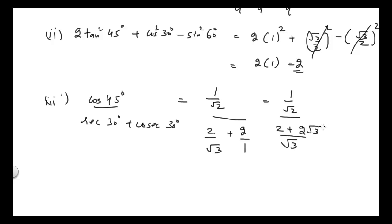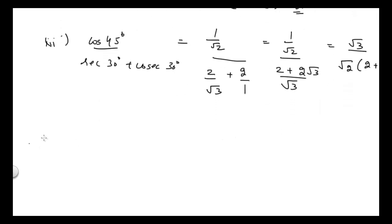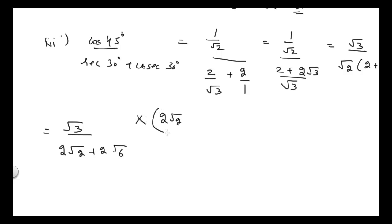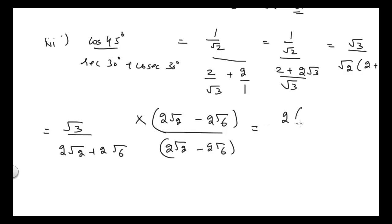After simplifying, we get √3 / (√2 · (2 + 2√3)), which can be written as √3 / (2√2 + 2√6). To rationalize this, I will multiply numerator and denominator by (2√2 − 2√6).